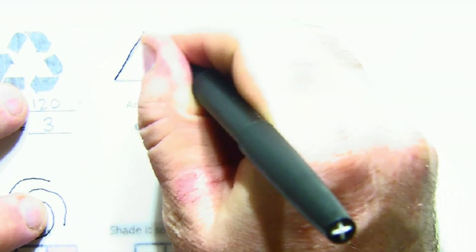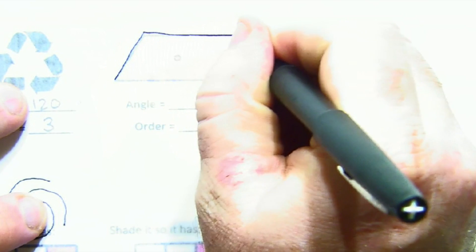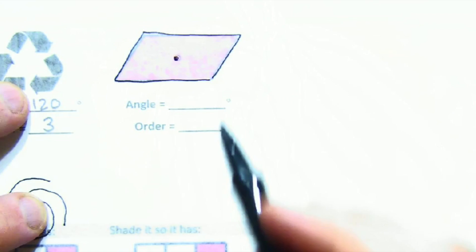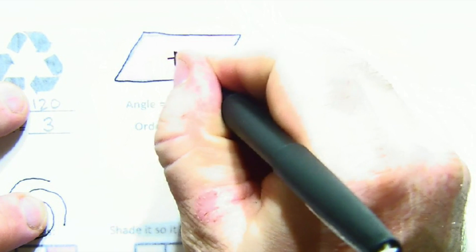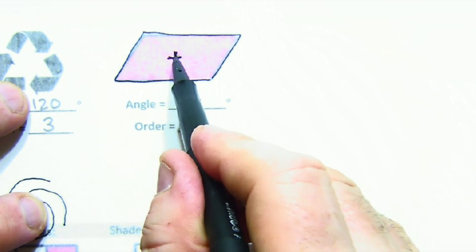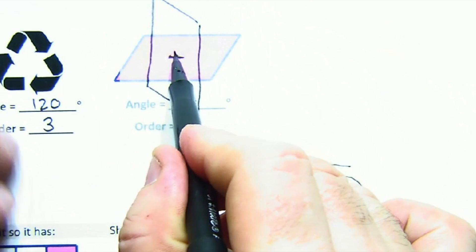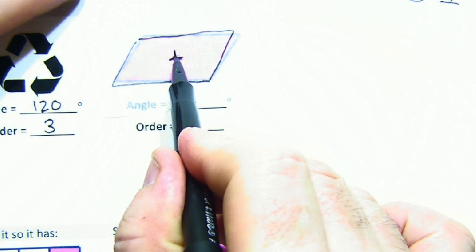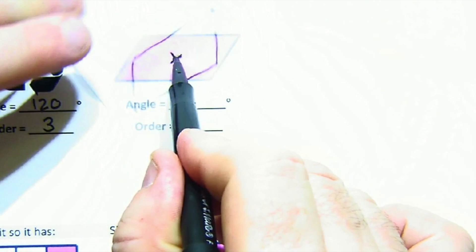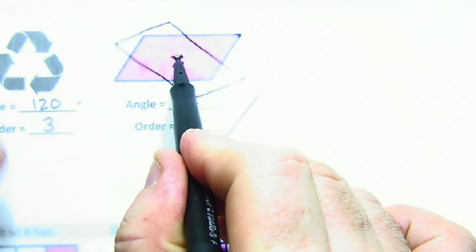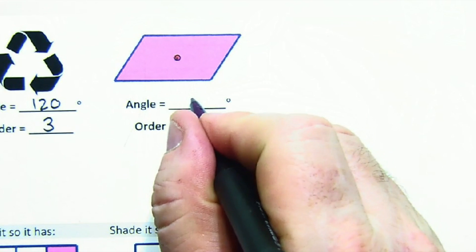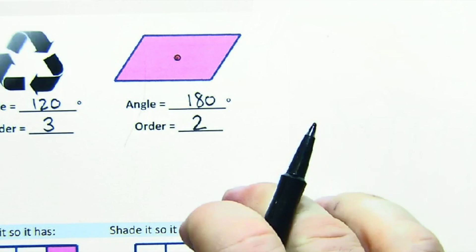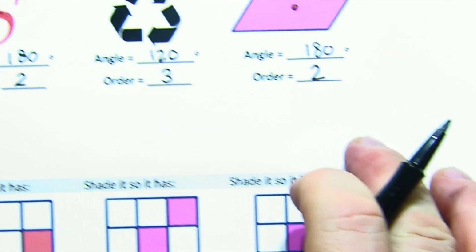Here would be an angle of 120 and an order of three. Let's try the parallelogram — I'll quickly sketch it. Patty paper is great for this, and again I like to make a little plus sign to keep track of things. At 90 degrees no match, at 180 — there it is! At 270 nothing, then back to 360. So again, 180 degrees and an order of two.